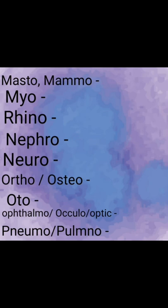Next is nephro, meaning kidney — for example, nephrologist. Next is neuro. A neurologist is a doctor who specializes in treating diseases of the nervous system, so neuro means nervous system.